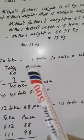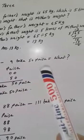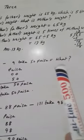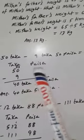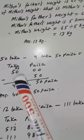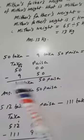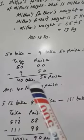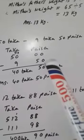50 taka minus 9 taka 50 paisha equals what? First, write taka and paisha: 50 taka 00 paisha minus 9 taka 50 paisha. We have to subtract from 0.